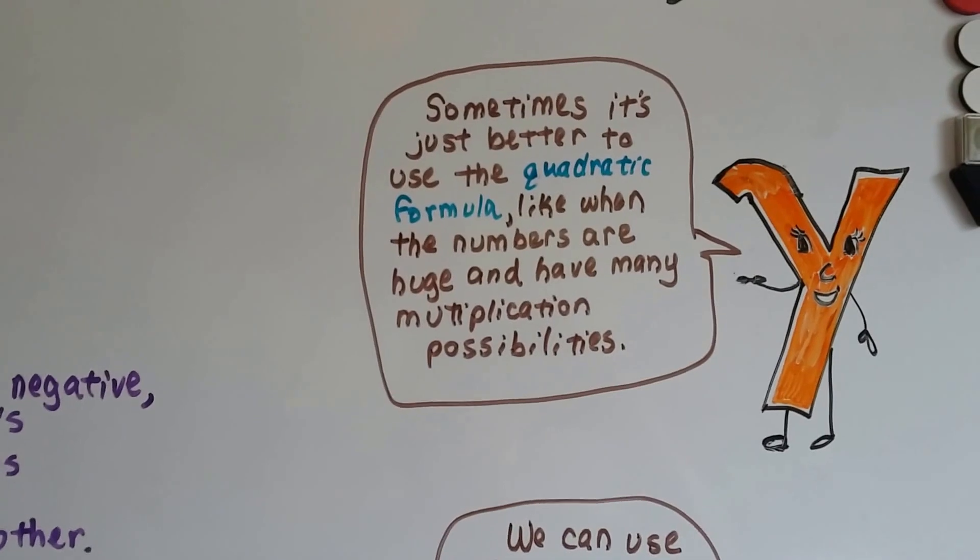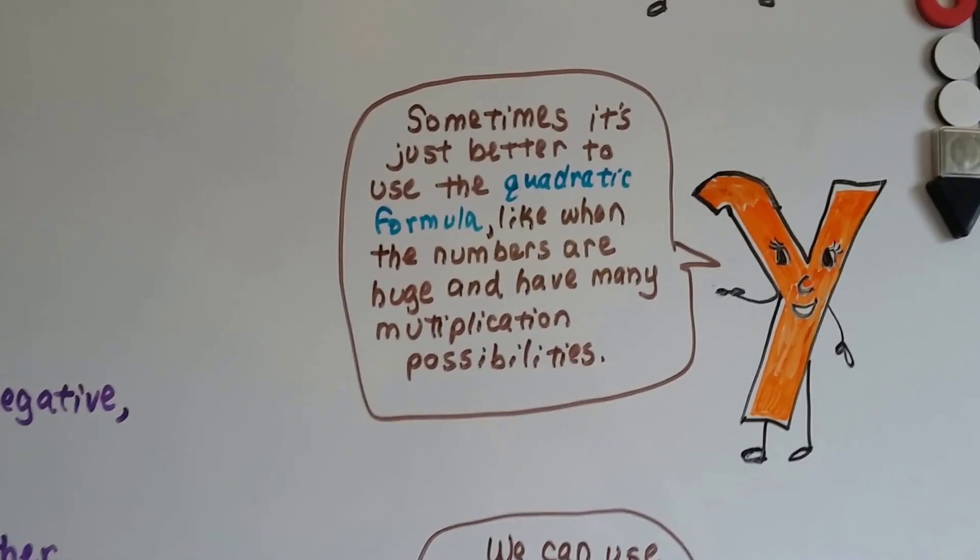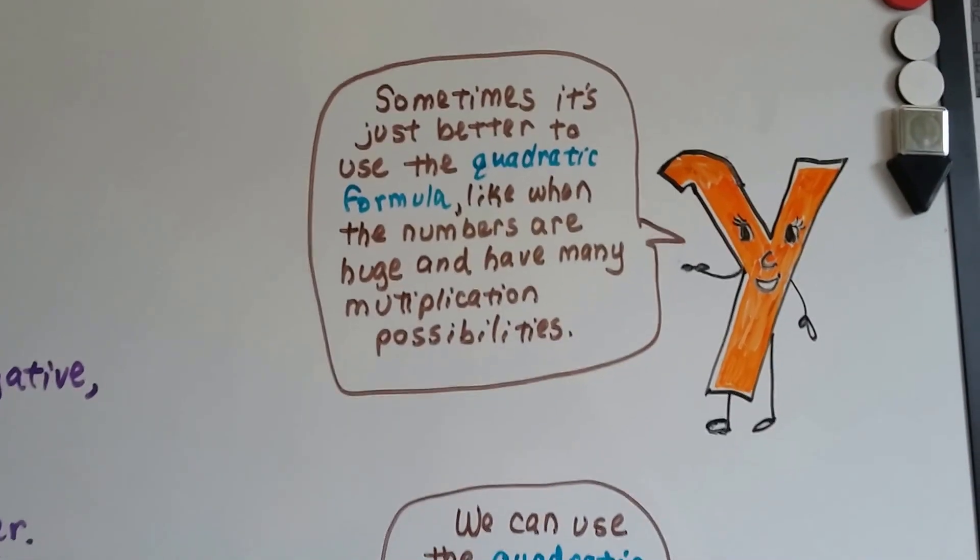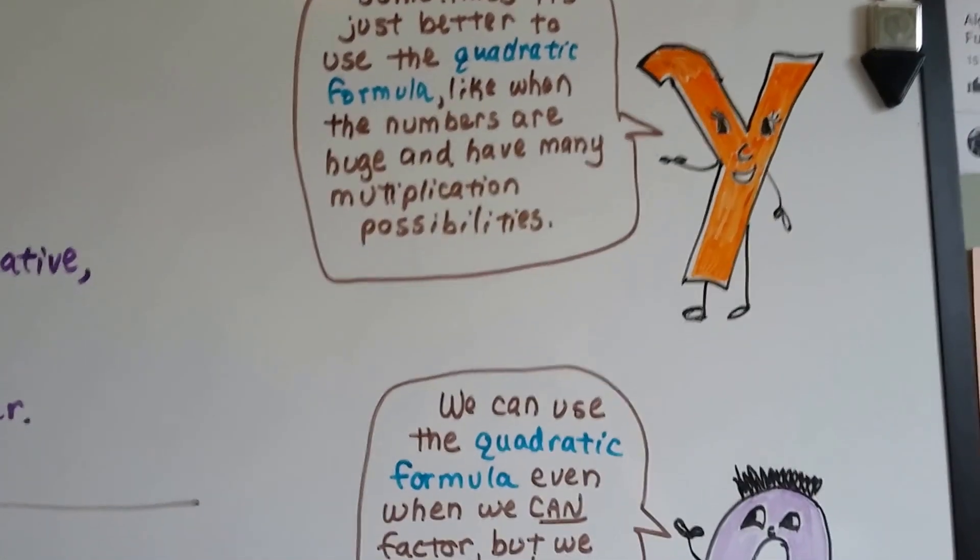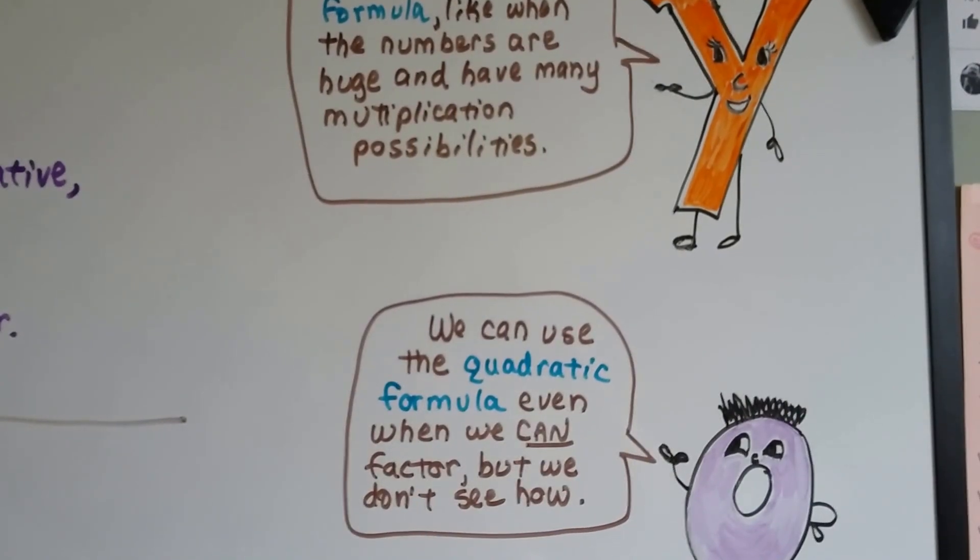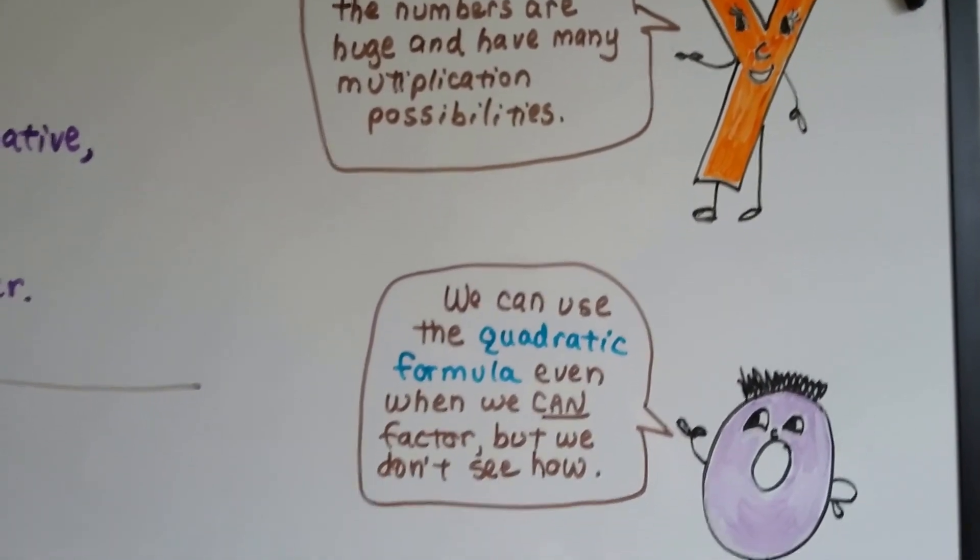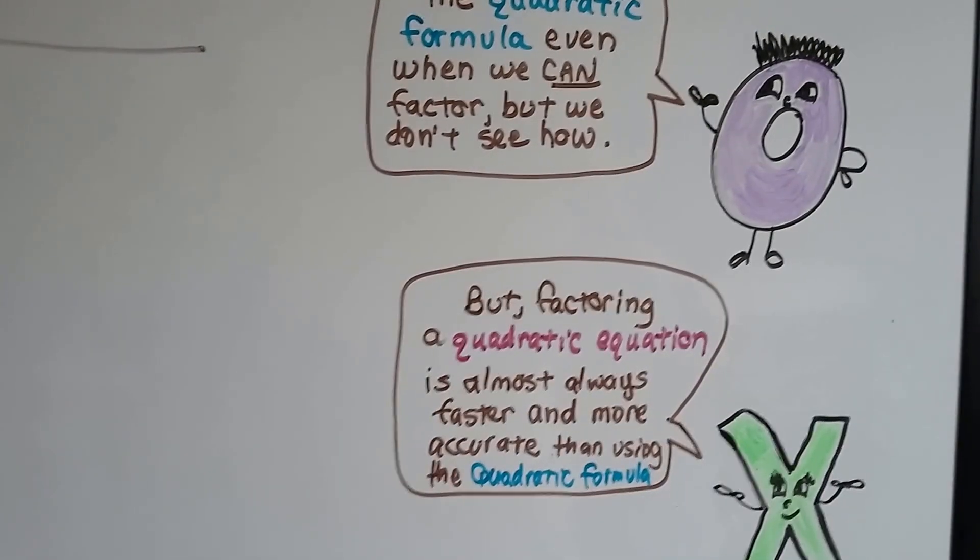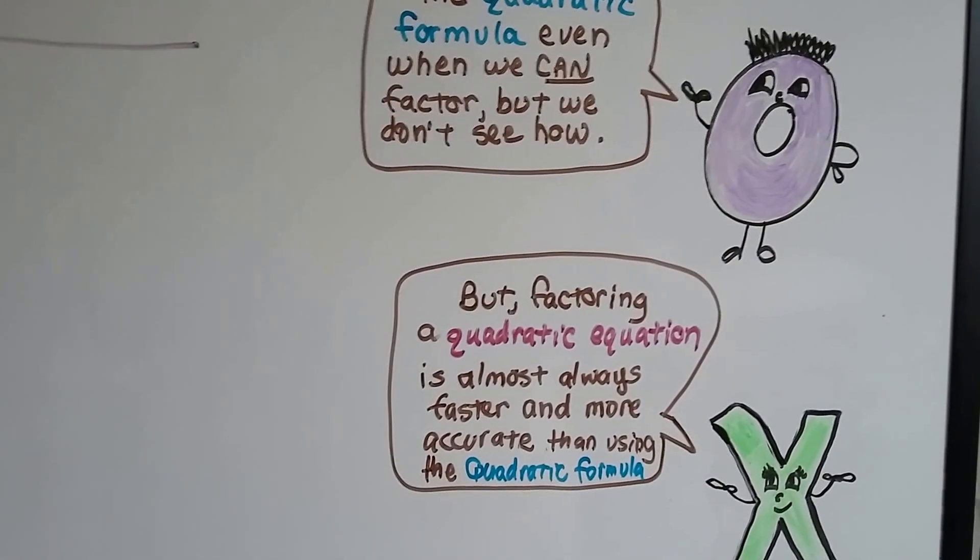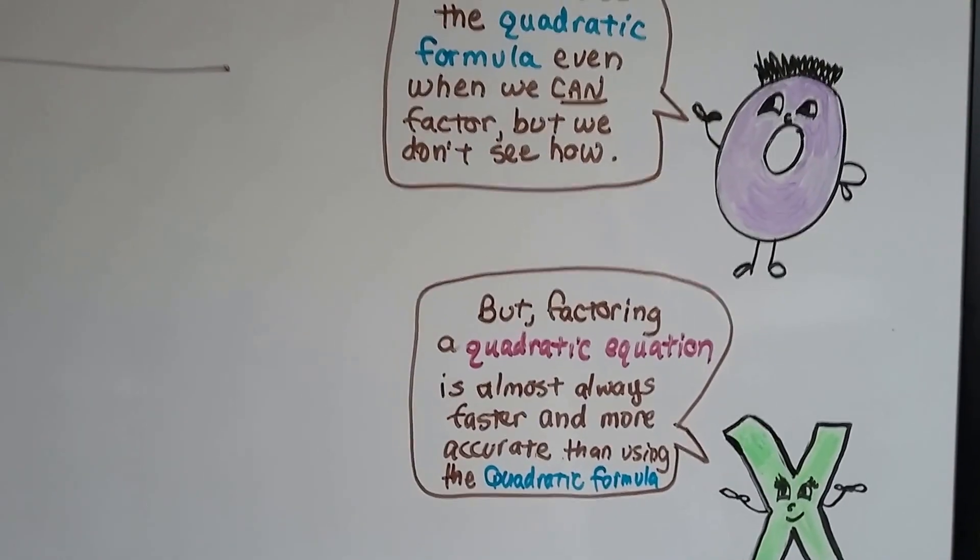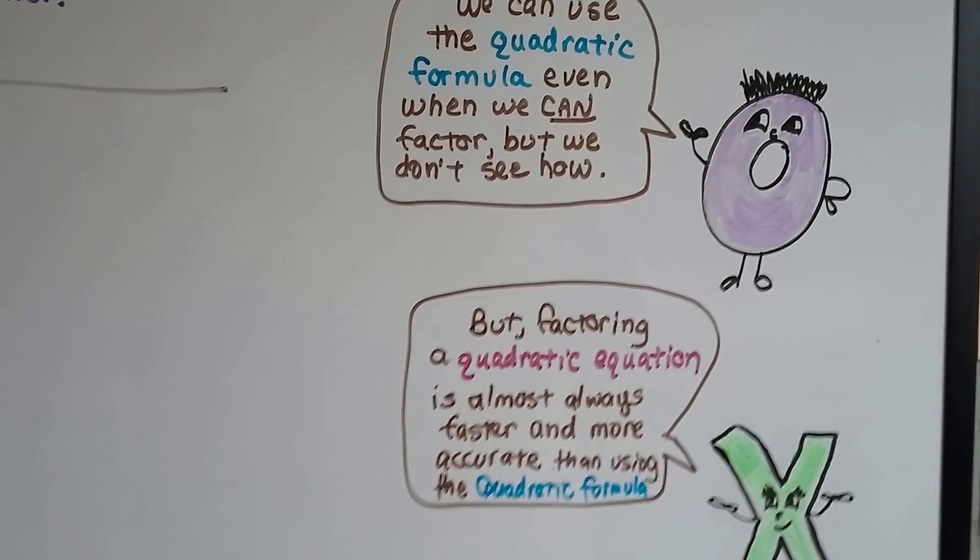So, sometimes it's better to use the quadratic formula. Like when the numbers are huge and have many multiplication possibilities. And we can use the quadratic formula even when we can factor, but we don't see how to factor. Just use the quadratic formula. But, factoring a quadratic equation is almost always faster and more accurate than using the quadratic formula. So we want to factor whenever we can, but it's nice to have him to fall back on, isn't it?